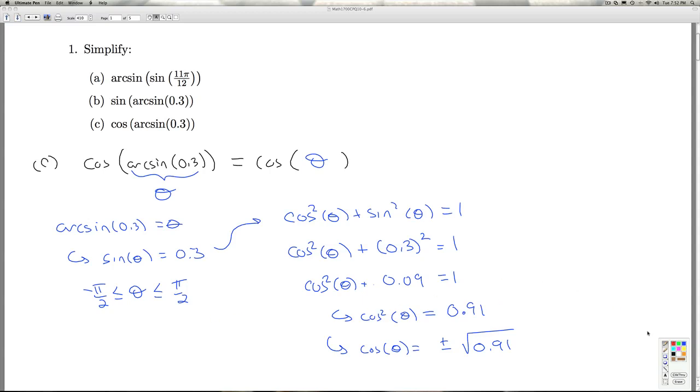That means that the cosine of theta is plus or minus the square root of 0.91. Now, I look back to the range on theta. The arcsine gives me numbers between negative π over 2 and π over 2. Those correspond to angles which are either in the first and fourth quadrant. Since we know the sine of theta is 0.3, positive, I know that theta is quadrant 1.